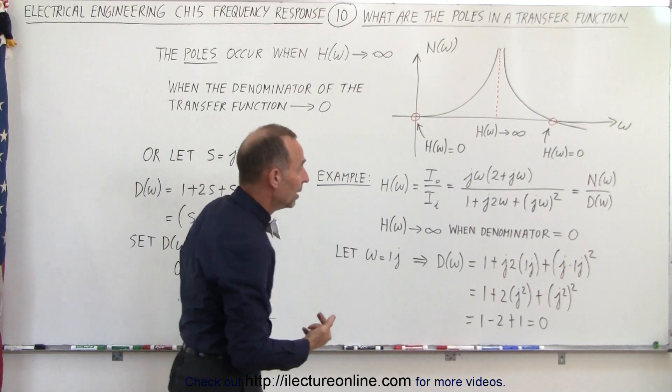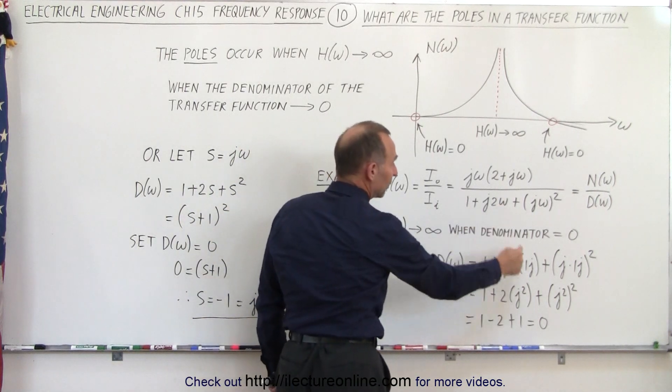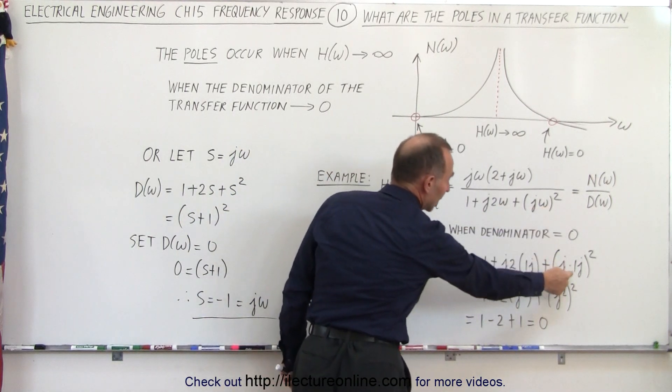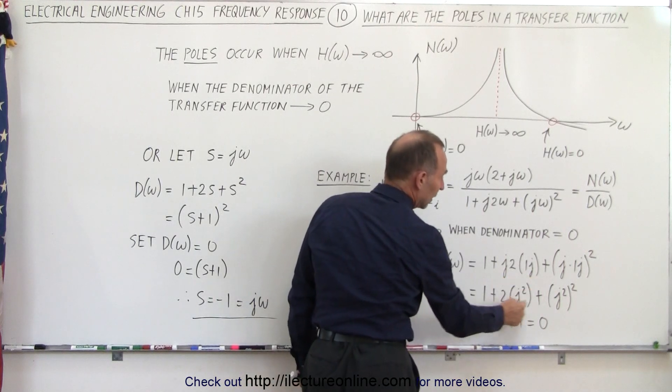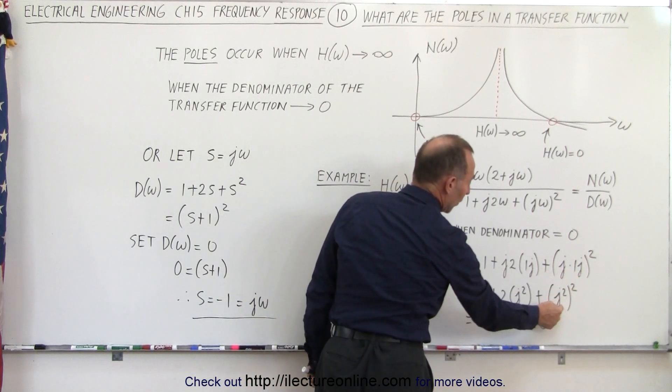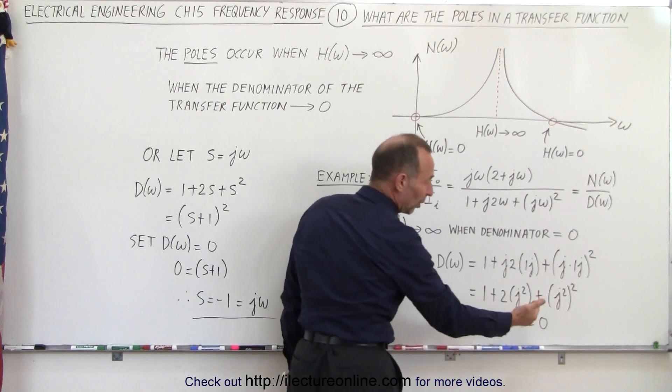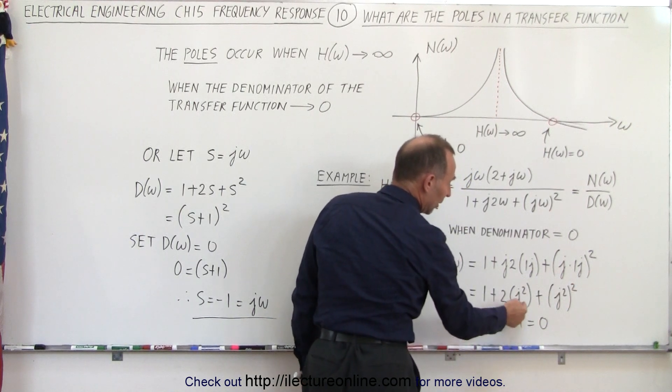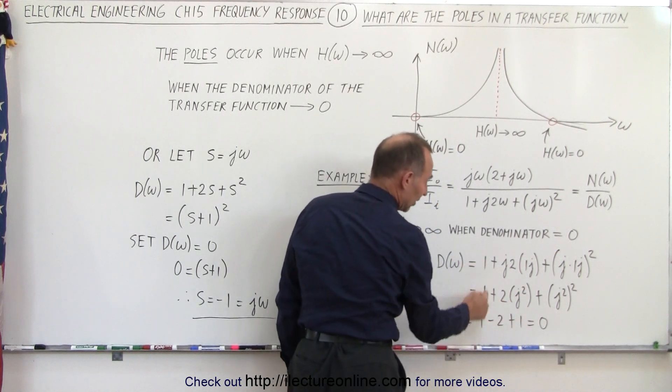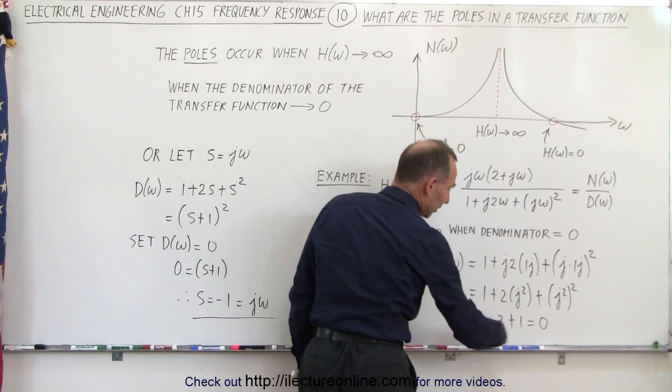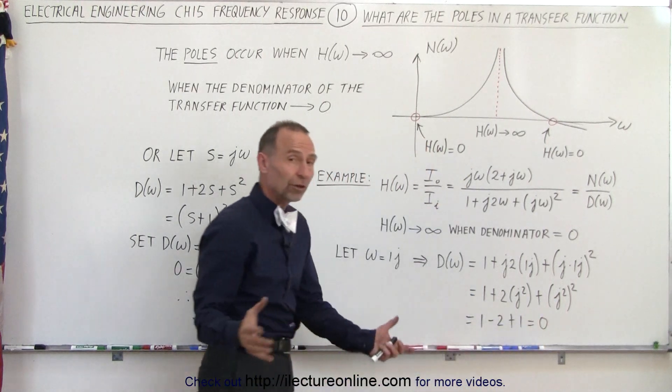If omega equals 1j, we replace every omega by 1j. We do it again over here, and then notice that j times j is j squared, and j times j is j squared. j squared is minus 1, and minus 1 squared gives us a positive 1, but minus 1 times 2 gives us negative 2, and then we still have the one from the front. But if we add everything together, we get zero for the denominator.